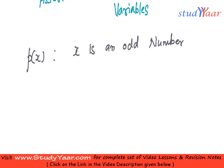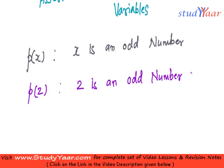Now, whenever we specify a value of X, we say that we bind that particular value to X. So if I say P of 2, then it basically means 2 is an odd number, and this statement is false.